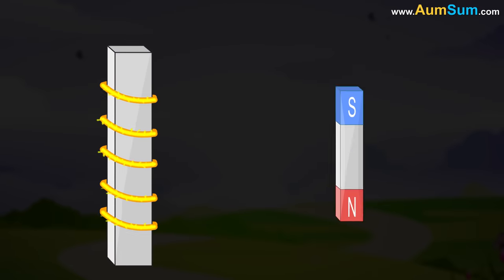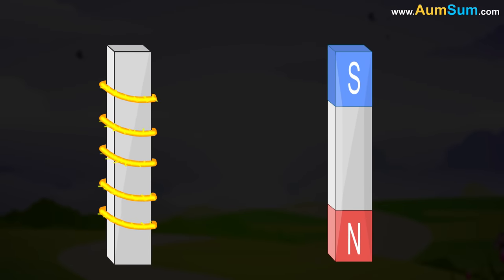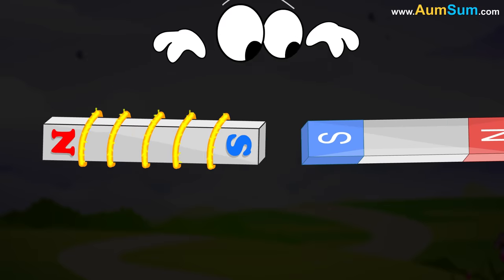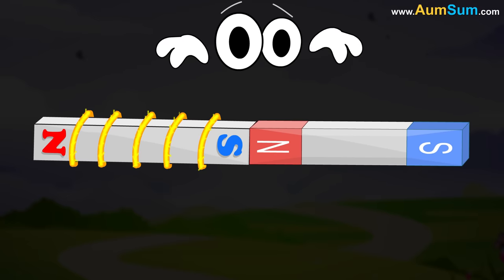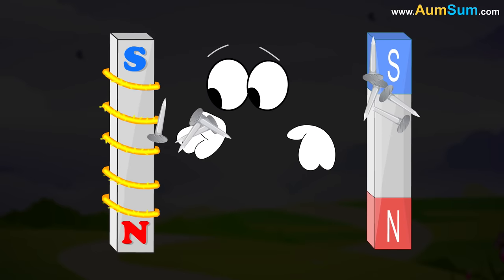An electromagnet is similar to a magnet. It has two poles. Like poles repel each other while opposites attract. It is also able to attract iron filings.